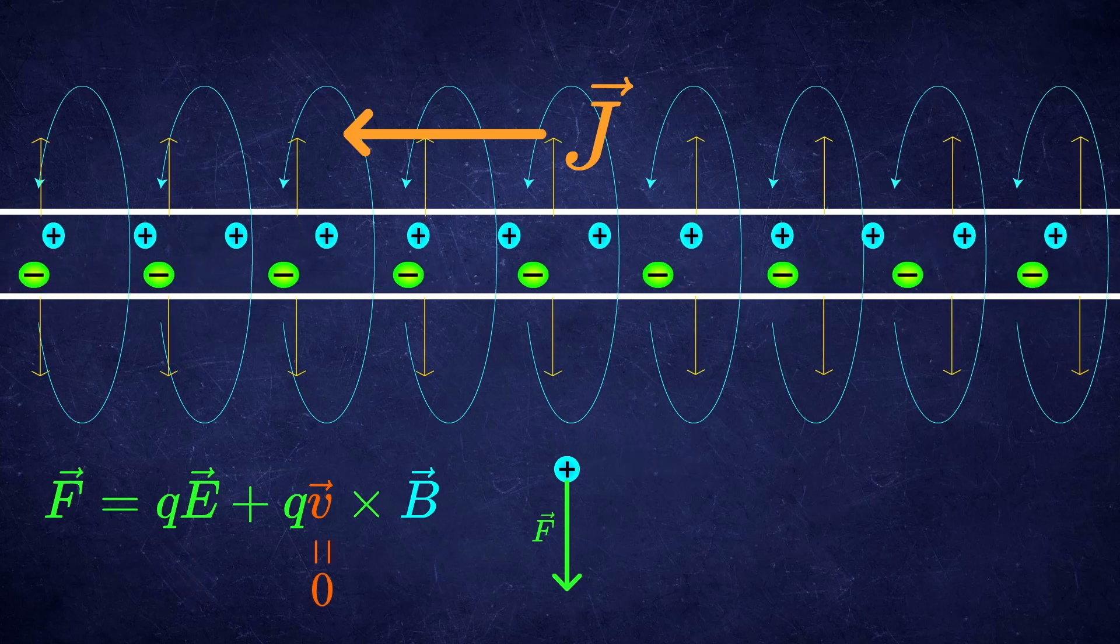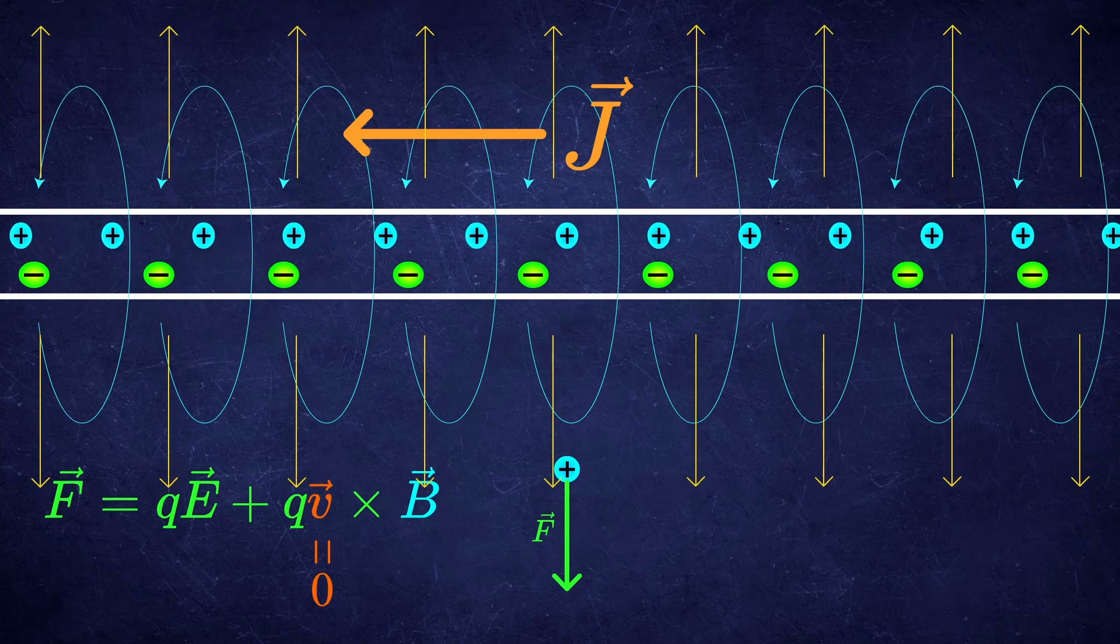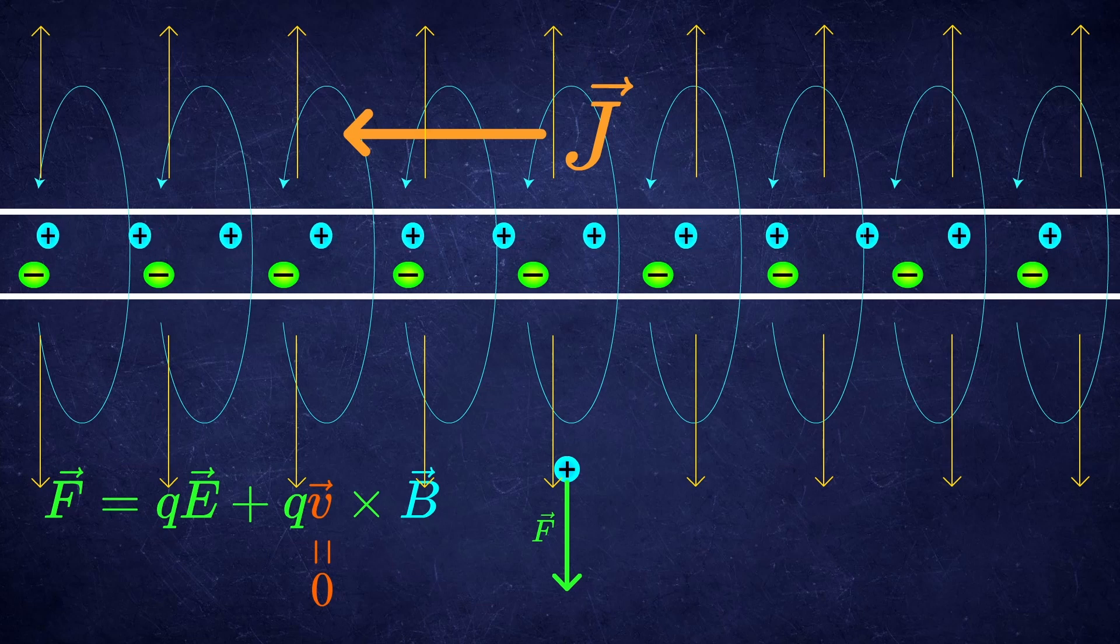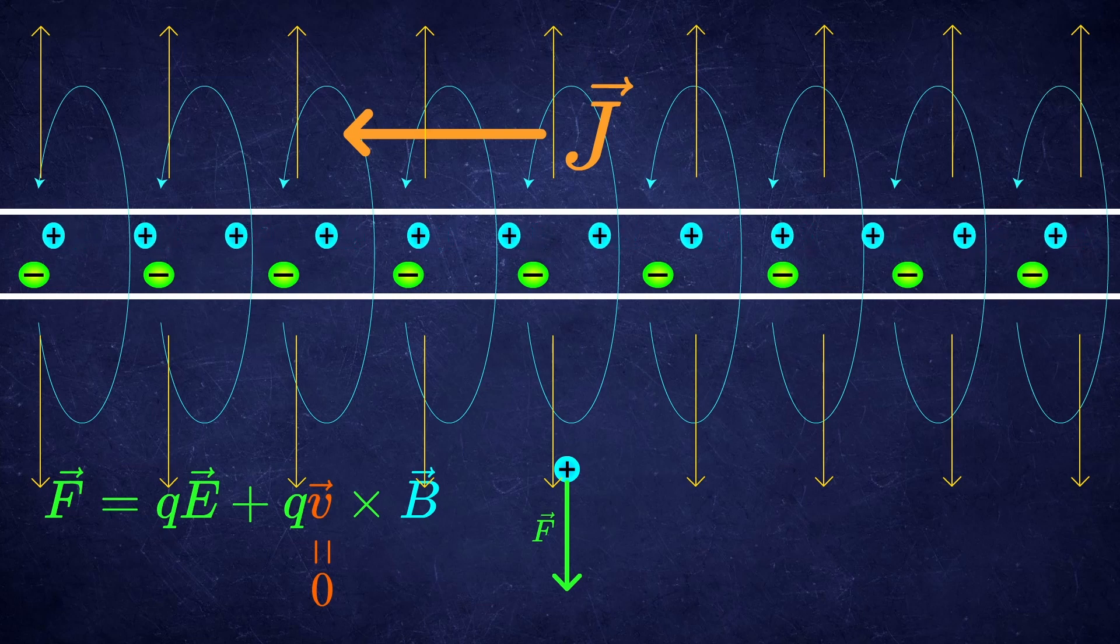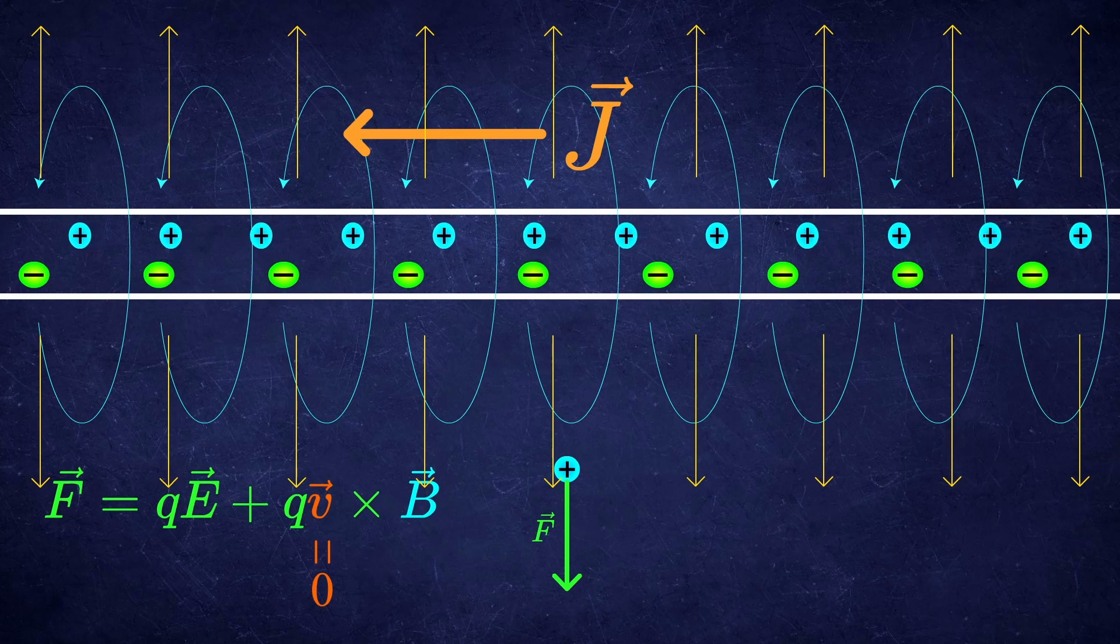Then, if you move into the rest frame of the charge due to length contraction, the density of protons increases and the density of the electrons decreases, leaving non-zero net charge of the wire, which creates a non-zero electric force on the particle, but zero magnetic force since the velocity vanishes.